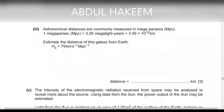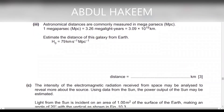The next question: astronomical distances are commonly measured in megaparsecs (Mpc). One megaparsec equals 3.26 mega-light-years, which equals 3.09 × 10¹⁹ km. We need to estimate the distance of the galaxy. Using Hubble's law: V = H₀ × D, so D = V / H₀.